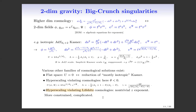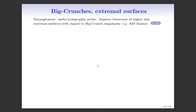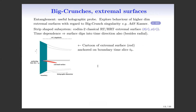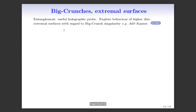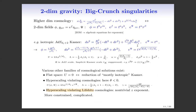I'll now begin to talk about entanglement structures in these theories. Entanglement, as we've known over the last many years, is a useful holographic probe. In the current context, we'd like to explore the behavior of higher-dimensional extremal surfaces with regard to the big crunch singularity, particularly focusing on the ADS-Kasner class. The natural subsystem is strip-shaped, consistent with the symmetries of this space.